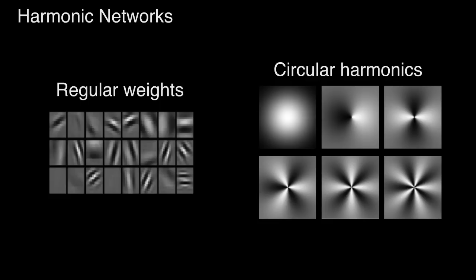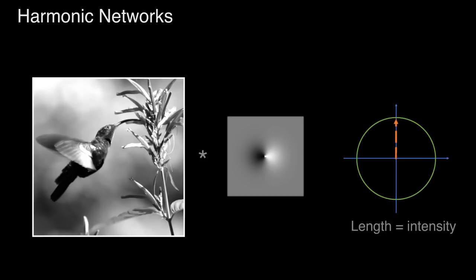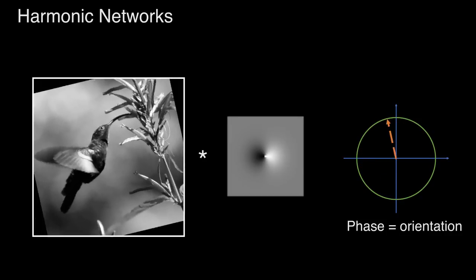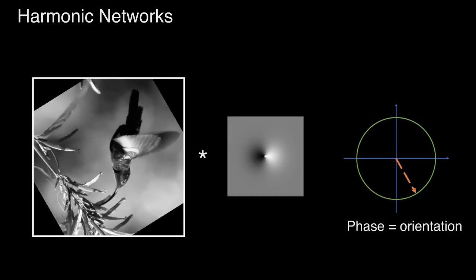Our solution is to replace regular CNN weights with a basis of circular harmonics, hence the name harmonic networks. Circular harmonics disentangle feature intensity information from 360 degree feature rotation and they allow us to introduce equivariance to 360 degree rotation into the feature mapping.